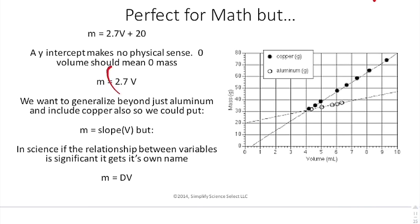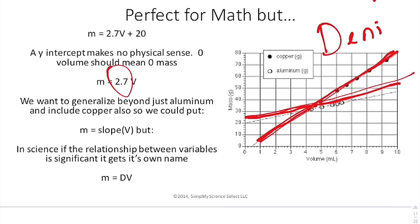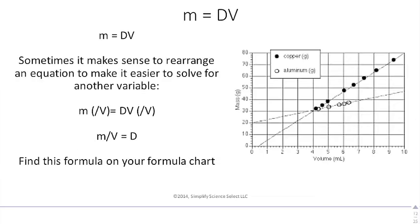This 2.7V represents the slope of this line. The slope of the line for copper and the slope of the line for aluminum are different. You have different values there. So we know this slope can change based on the substance that's there. We can say M equals the slope times V. But we call this thing a special relationship. The relationship between mass and volume, we actually give a special name. It's called density. So the origin of the density equation comes from measuring this relationship between mass and volume. And you get the equation M equals DV.